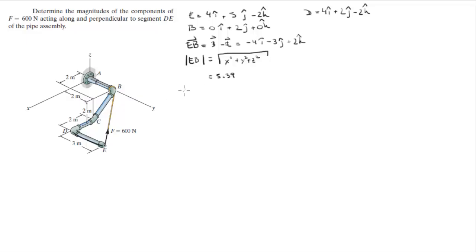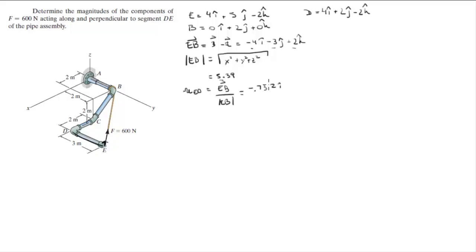Then you want to find the unit vector that acts along E to B. You find this unit vector — which has a magnitude of 1 — by dividing the vector by its magnitude. So you're going to divide each of these components by 5.39, and you get that the unit vector is equal to negative 0.742i minus 0.557j plus 0.371k.